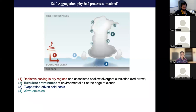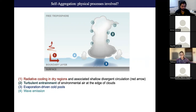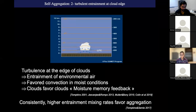The second physical process is turbulent entrainment at the edge of clouds. For anyone who has seen a cloud form, it looks like a cauliflower structure — very turbulent at the edge. As clouds go up, they entrain air from the neighborhood. If there was a cloud before, the air will be moist, favoring cloud formation. Conversely, if there was no cloud before, the air is dry and turbulent entrainment will entrain dry air, making the cloud less buoyant. So if you had a cloud before, it's moist and easier to make a new cloud — that's a positive feedback.